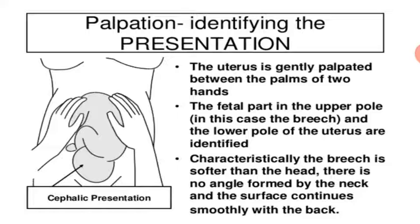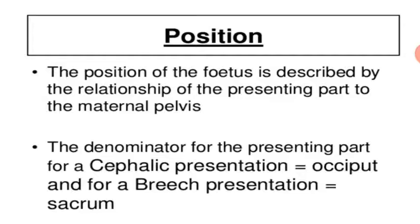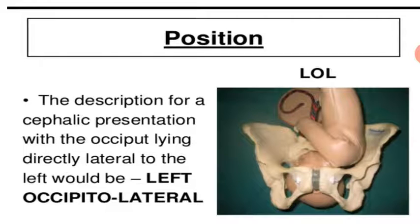The breech is softer than the head; there is no angle formed by the neck and the surface continues smoothly with the back. The position of the fetus is described by the relationship of the presenting part to the maternal pelvis. The denominator for a cephalic presentation is the occiput, and for a breech presentation it is the sacrum. For a cephalic presentation with the occiput lying directly lateral to the left, it would be left occipital lateral.